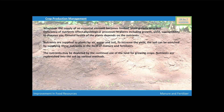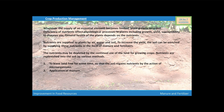The nutrients may be depleted by the continual use of land for growing crops. So nutrients are replenished into the soil by various methods. First, to leave land free for some time so that the soil regains nutrients by the action of microorganisms. Second, by applying manure. Third, by applying chemical fertilizers.